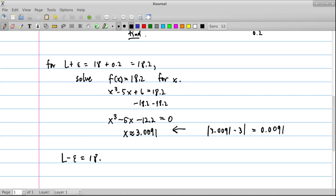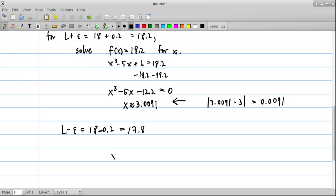So what else do we have to do? We have to consider L minus epsilon. So in this case, it would be 18 minus 0.2, which is 17.8. And then we repeat all the same work.